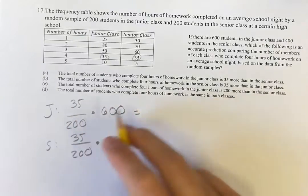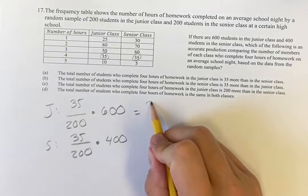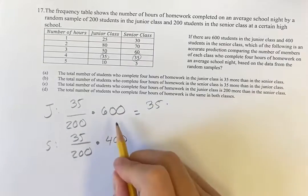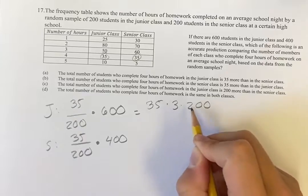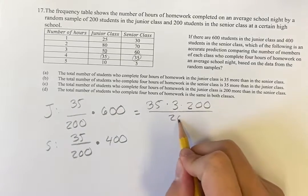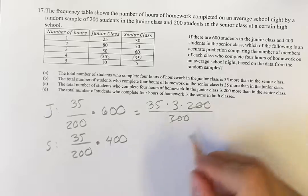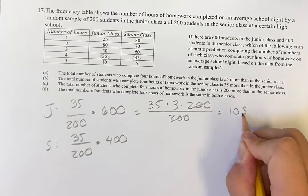So 35 times 600 over 200, those are some big numbers until you realize that 600 is equal to 3 times 200, 3 times 2 being 6, divided by 200. So these cancel out and we're left with 35 times 3 is 105.